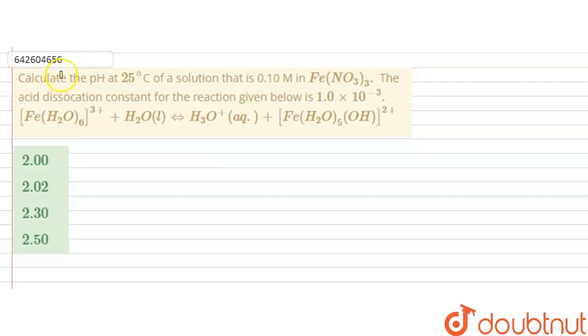Hello students, the question is, calculate the pH at 25 degrees Celsius of the solution that is 0.1 molar in Fe(NO3)3 and the acid dissociation constant for the reaction given below is 1 into 10 raised to the power minus 3 and the reaction is this, that is Fe(H2O)6 3+ plus water forms hydronium ion aqueous plus this complex, charged complex.